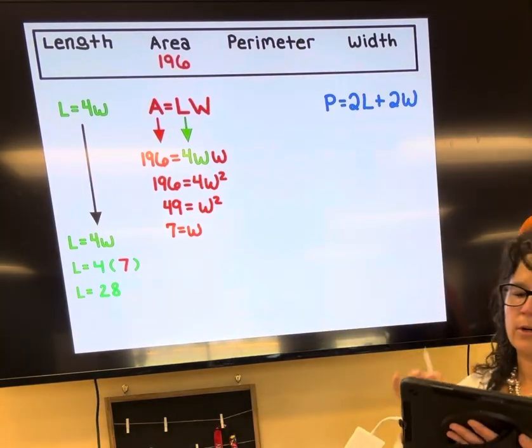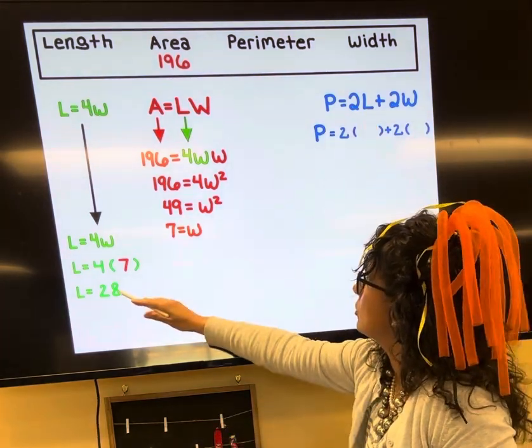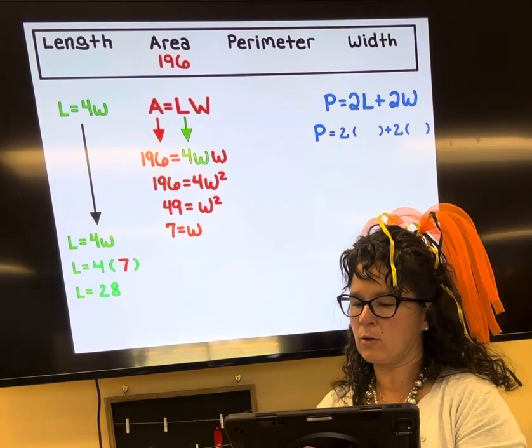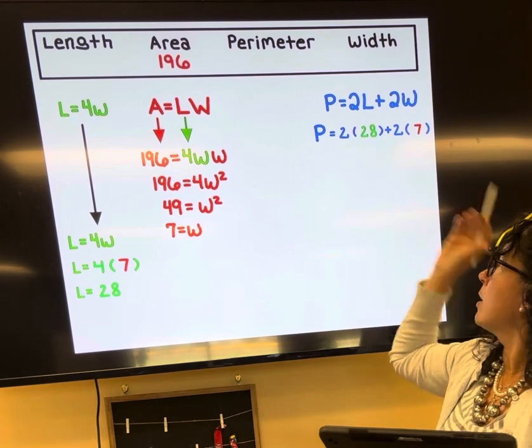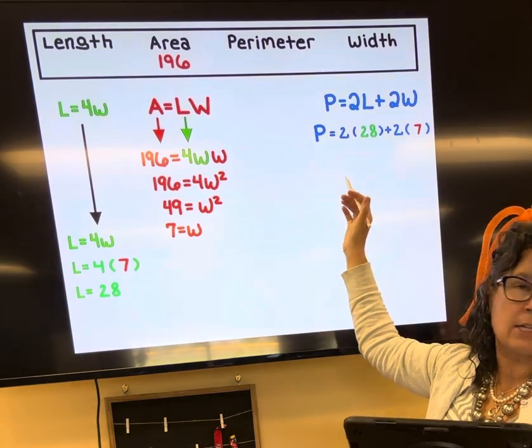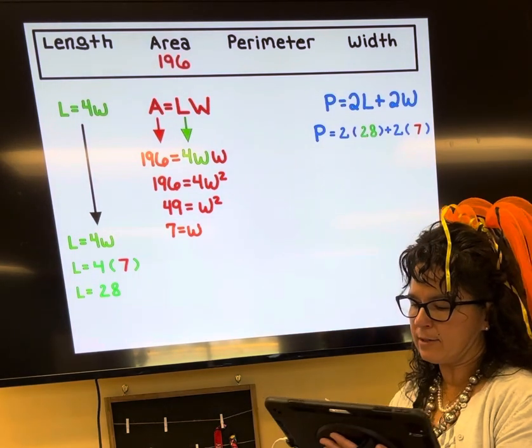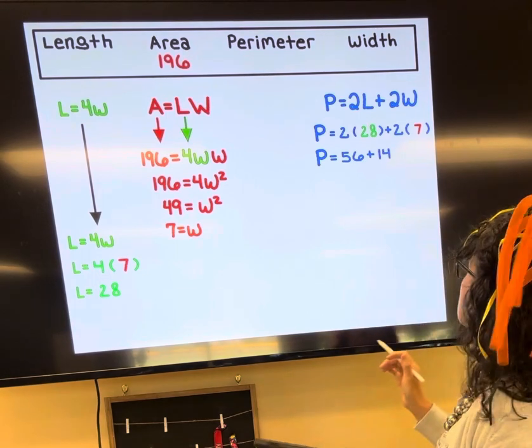I now know the width and I know the length, so I could find the perimeter. I come in and replace the length with 28 and the width with seven. So let's make those substitutions. We're just simplifying the right side, so we're following PEMDAS. I'm going to take two times 28 and two times seven, so the P is going to equal 56 plus 14. 56 and 14 makes 70.